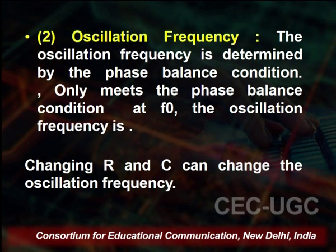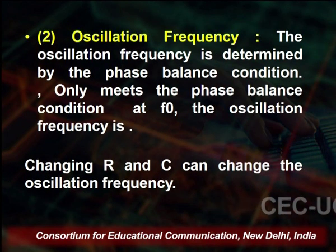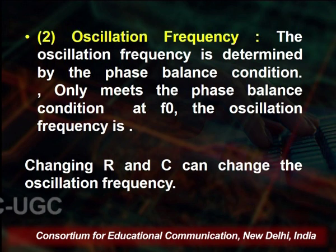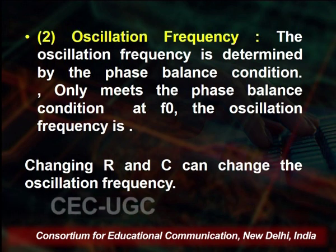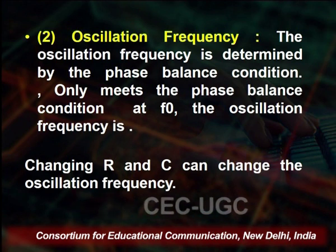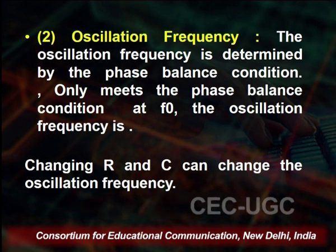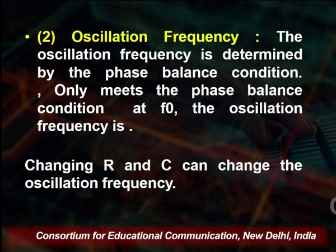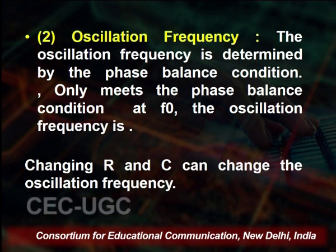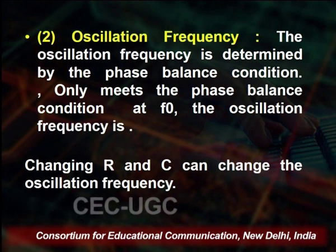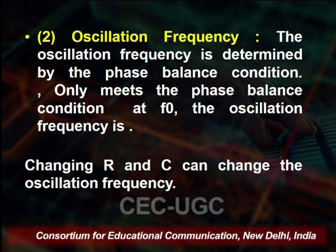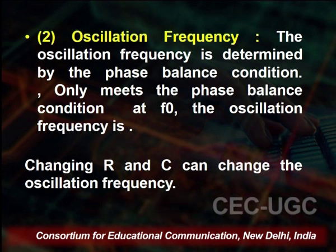The oscillation frequency is determined by the phase balance conditions. Only at the frequency where it meets the phase balance condition at f₀ will the oscillation occur, meaning changing R and C can change the oscillation frequency.